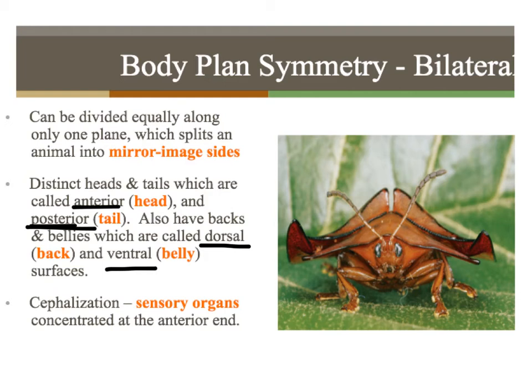One last thing on this slide: there's a term called cephalization. Cephalization means that you have sensory organs concentrated at the front end — you have a head region. Sometimes it's super advanced, like our heads and brains. Other times it is not, like a flatworm that just has light-sensing detectors in their head region. But that is still an example of cephalization.